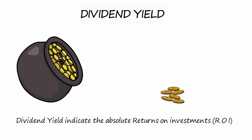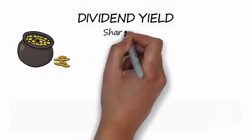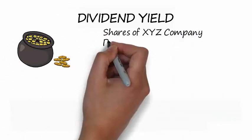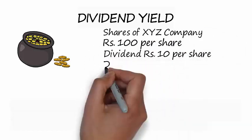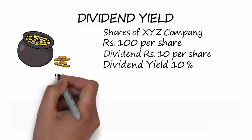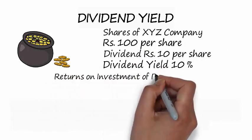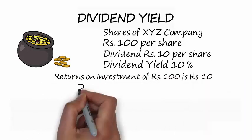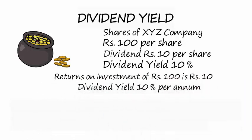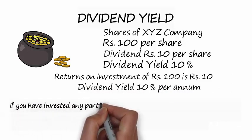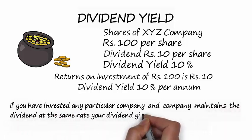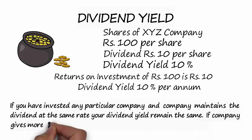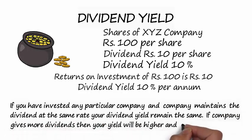Dividend yield indicates the absolute returns on investment (ROI) as on the investing day, and is calculated on the last dividend paid by the company. For example, if you have purchased shares of XYZ company at rupees 100 per share and the company has given dividend of rupees 10 per share, your dividend yield will be 10% — meaning returns on your investment of rupees 100 will be rupees 10. If the company maintains the dividend at the same rate, your dividend yield remains the same. If the company gives more dividends, your yield will be higher, and vice versa.